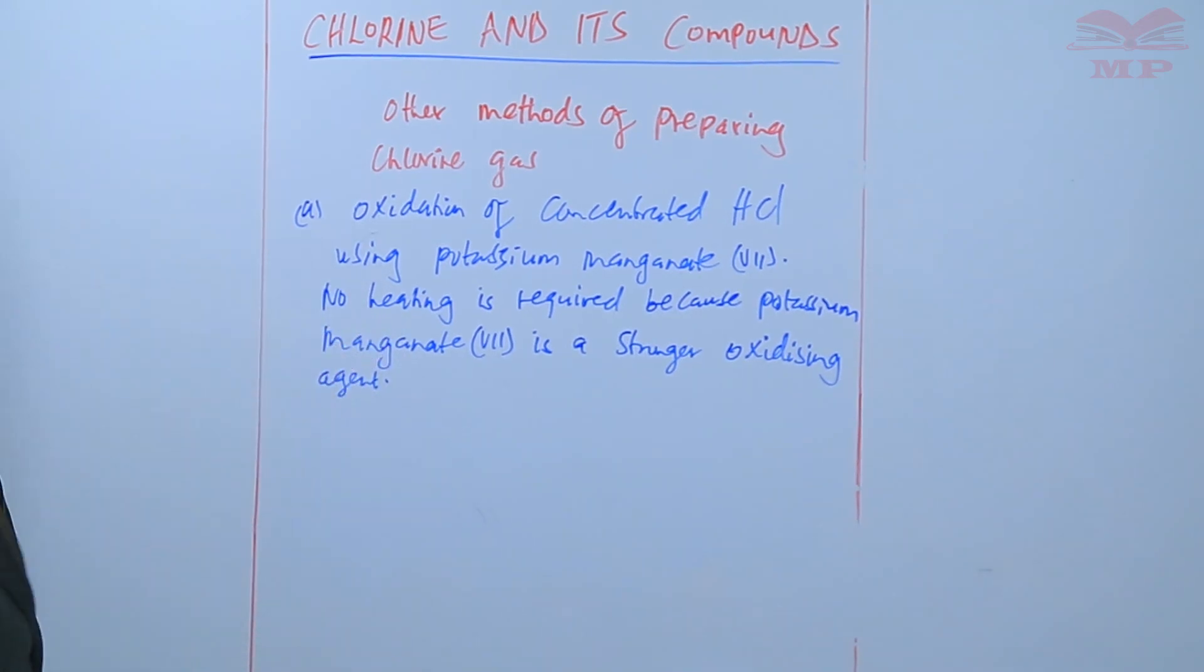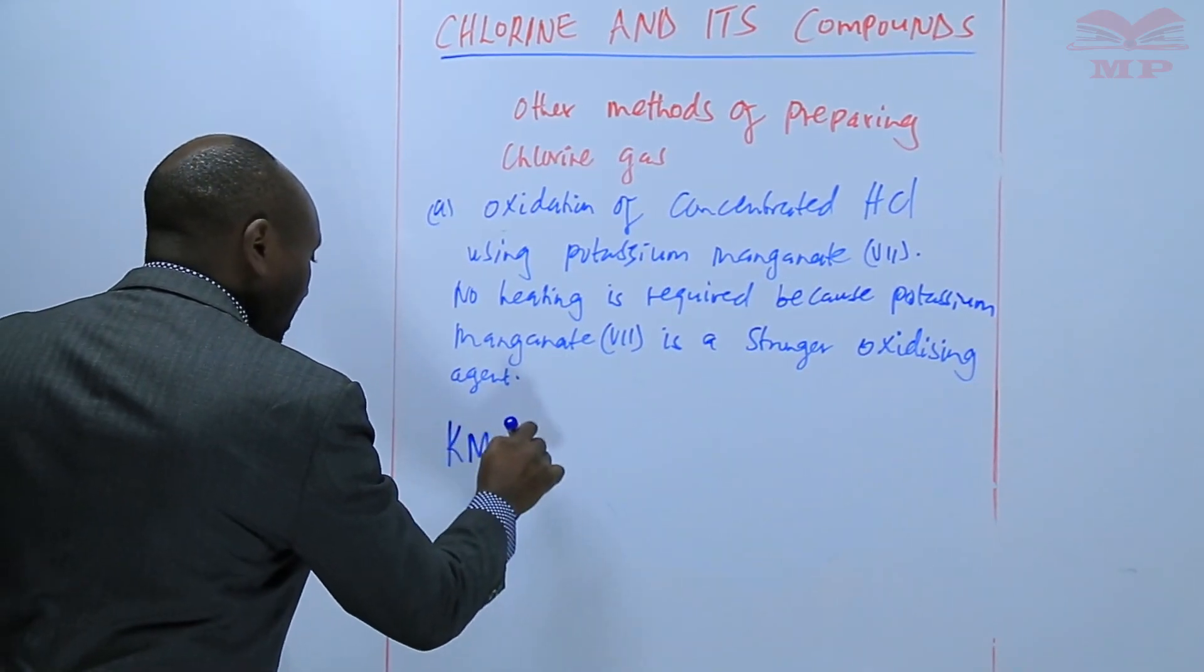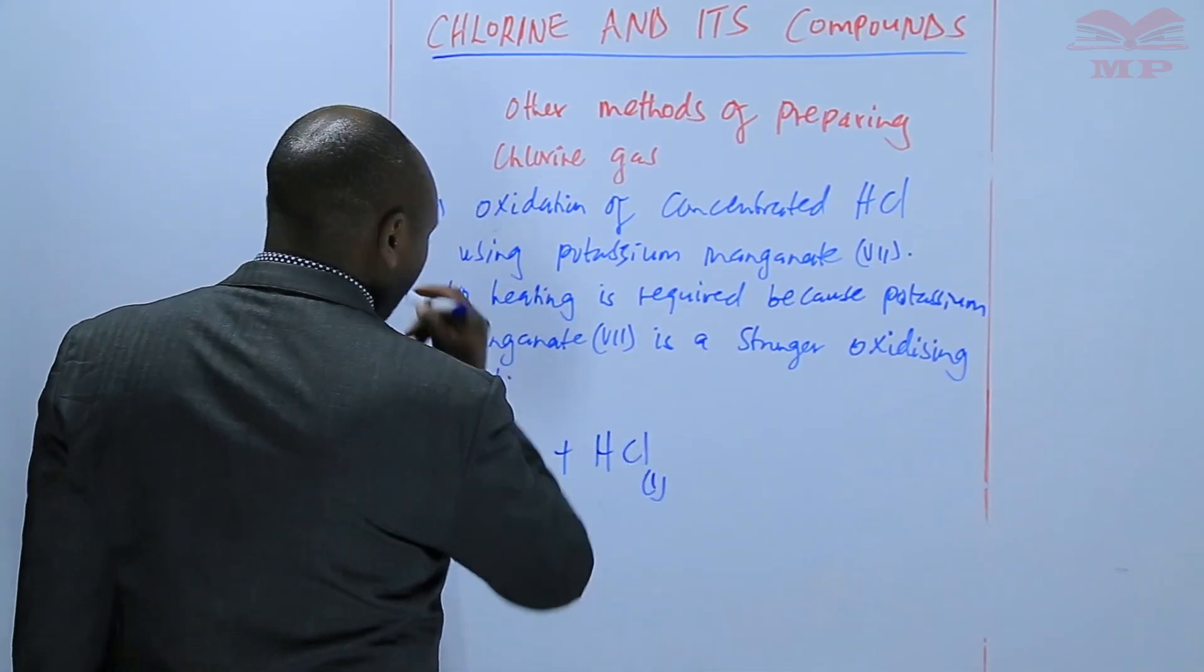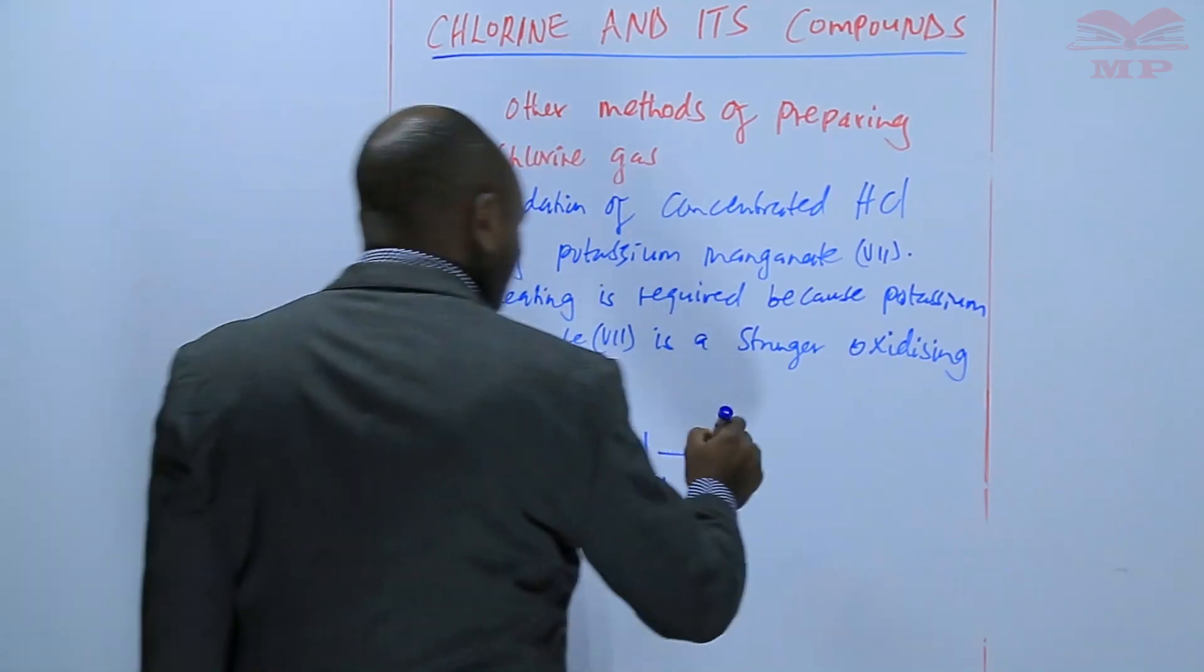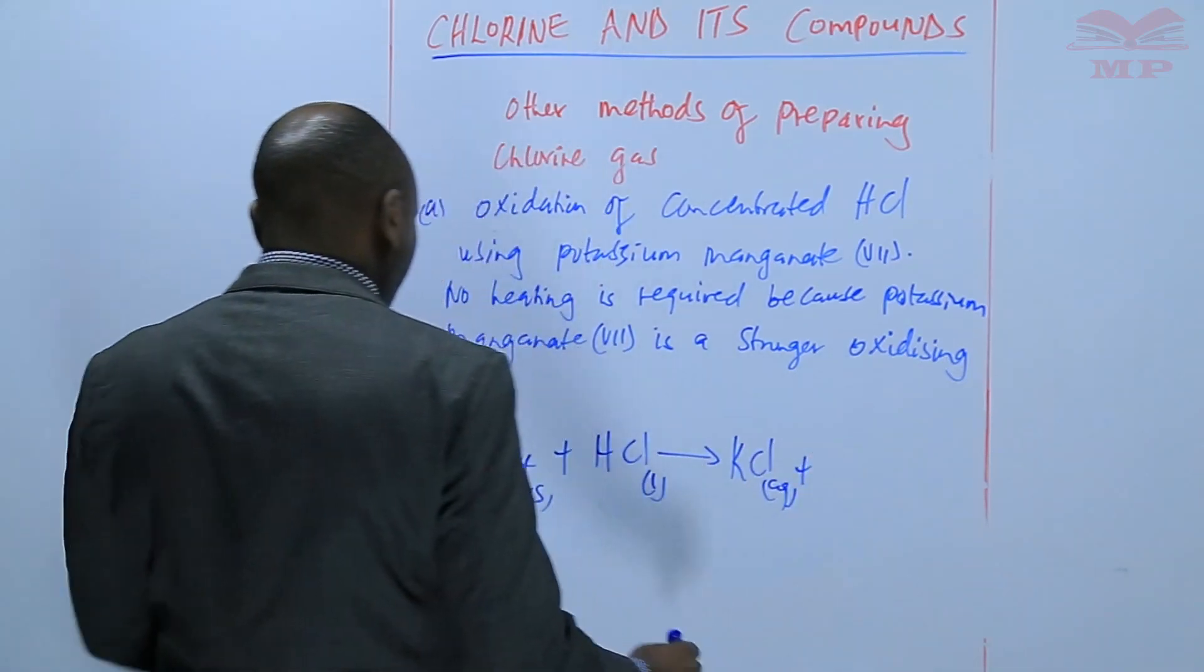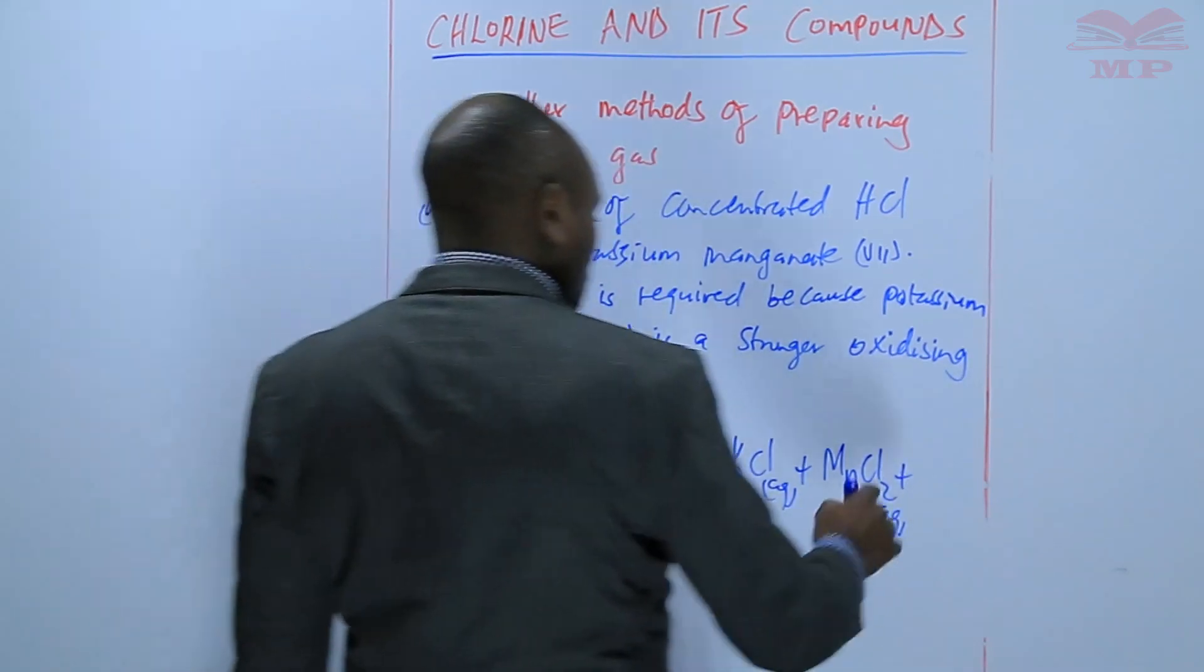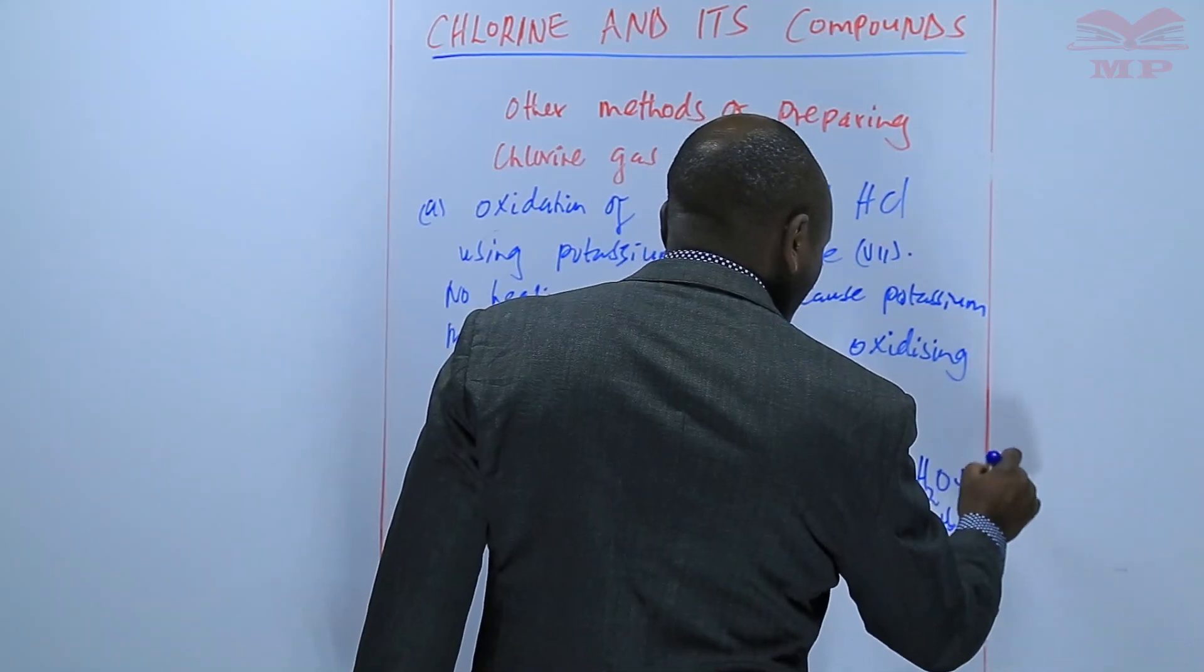In this case, we have potassium manganate seven oxidizing concentrated hydrochloric acid, and on this you get potassium chloride, manganese two chloride, plus water, plus chlorine.